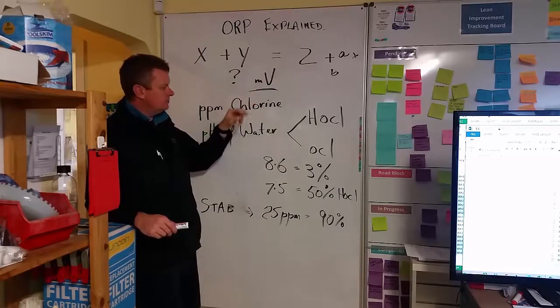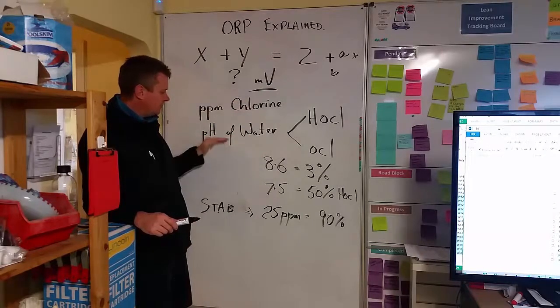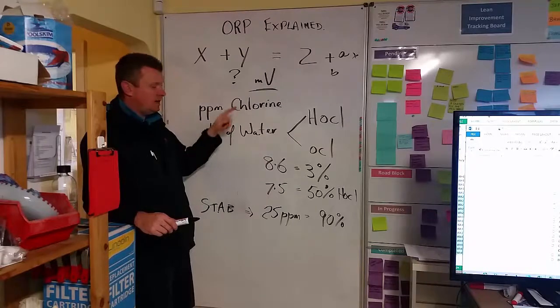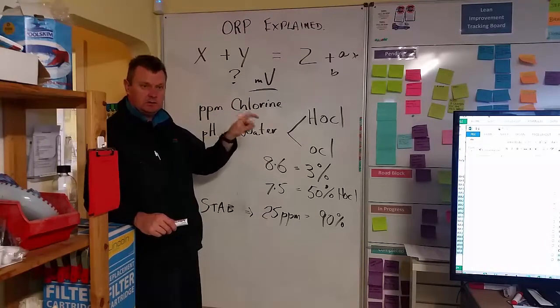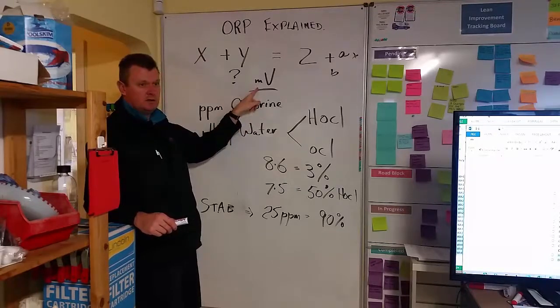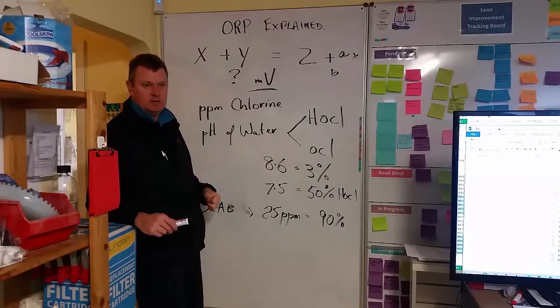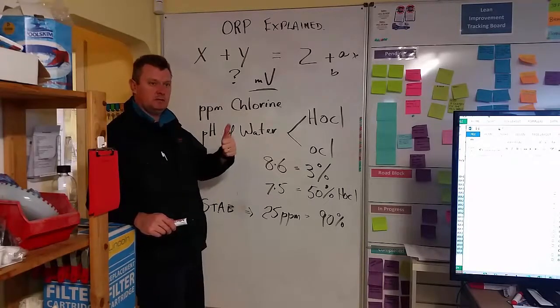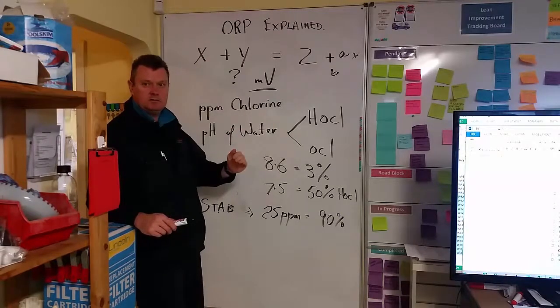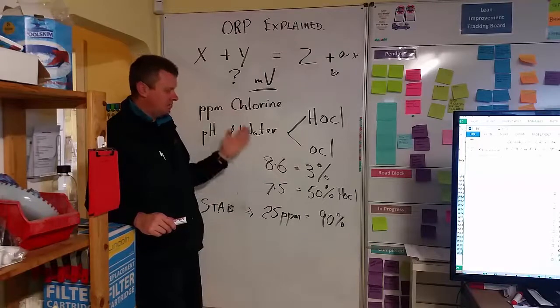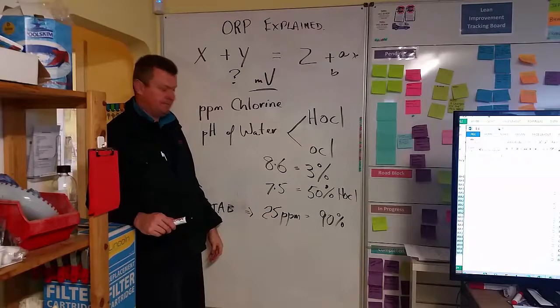So when you're looking at that, you've got to look at these other two. What's the pH and what's the stabiliser? Because yes, you might have seven parts per million chlorine. If you've got 70 parts stabiliser, you still want to have around 700 millivolts to make sure the killing power in the water is what it needs to be. You don't want to say, oh, seven ppm, that's cool, I'll turn the millivolts down to 600 to get that down to two when you've got 70 parts stabiliser.